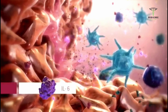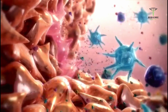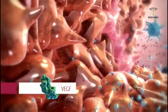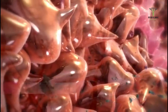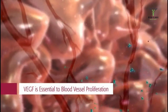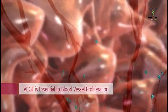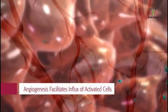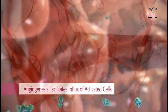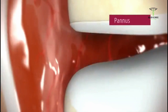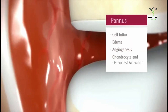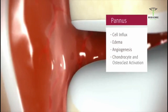In a key step, activated macrophages and synovial fibroblasts release pro-inflammatory cytokines including TNF-alpha, IL-1, and IL-6, and mediators of vascular growth including VEGF. VEGF is essential to the process of blood vessel proliferation, or angiogenesis, which facilitates an influx of activated cells.